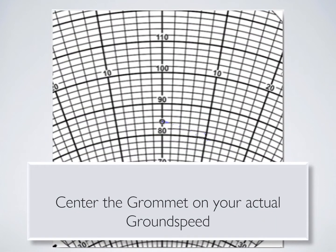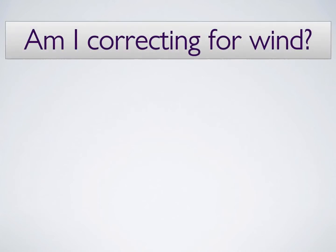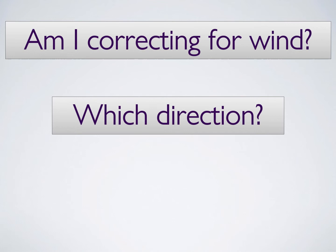Then, you're going to slide the wind speed ruler to center the grommet on your actual ground speed that you calculated or that your GPS is telling you. Next ask yourself, is the heading that you're actually flying what you plan to fly? And does that mean are you correcting for wind?